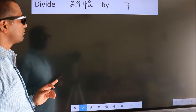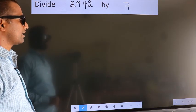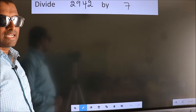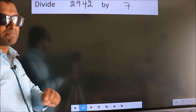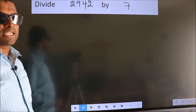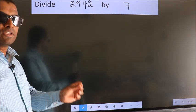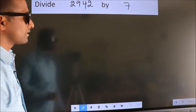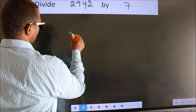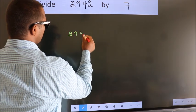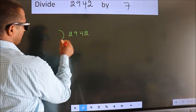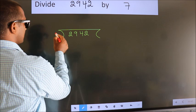Divide 2942 by 7. While doing this division, many do this mistake. What is the mistake that they do? I will let you know. But before that, we should frame it in this way. 2942 here, 7 here.